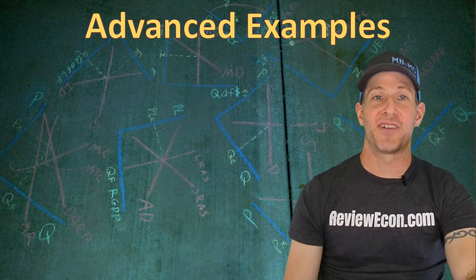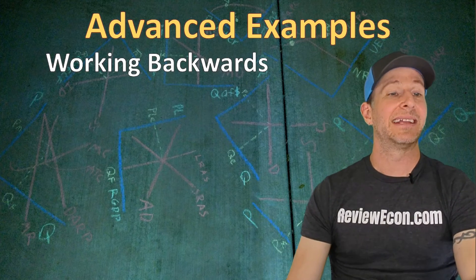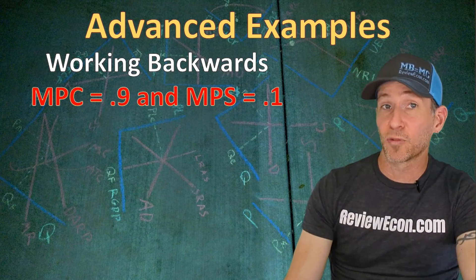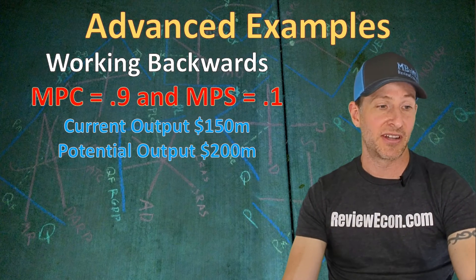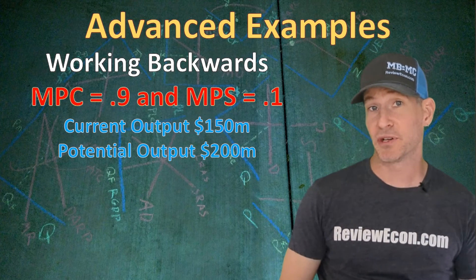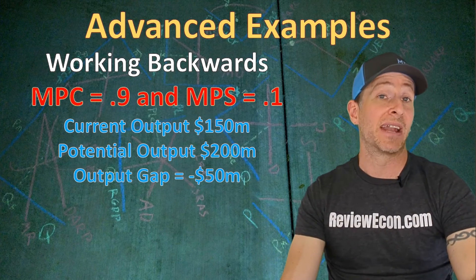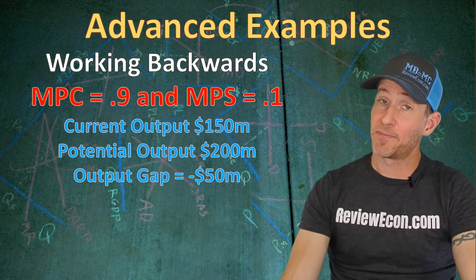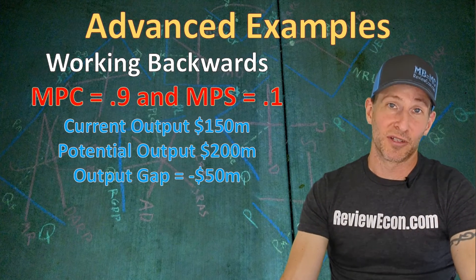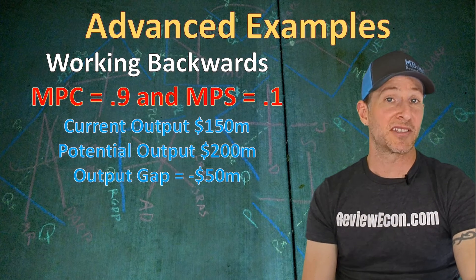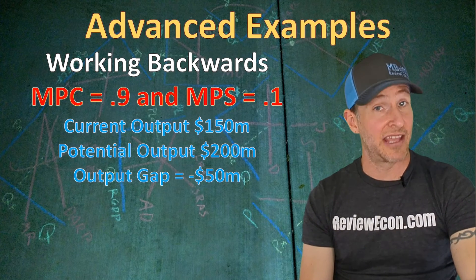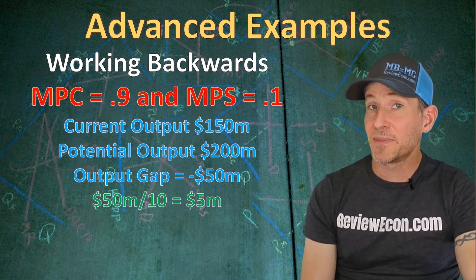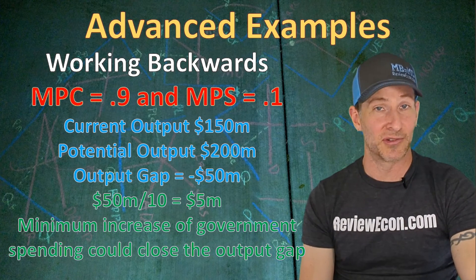Finally, we're going to look at some advanced examples, starting with working backwards. If a country has a 0.9 MPC and 0.1 MPS, the current real GDP is $150 million, but potential real GDP is $200 million — meaning there's an output gap of negative $50 million and the economy is in a recession. To find how much new government spending could close that recessionary gap, take the gap of $50 million divided by the spending multiplier of 10. That gives us a $5 million increase in government spending needed to close the output gap.